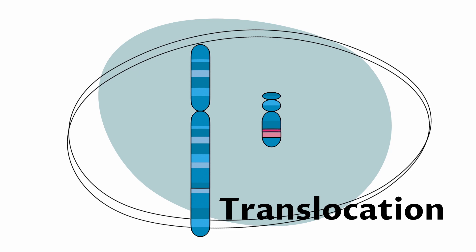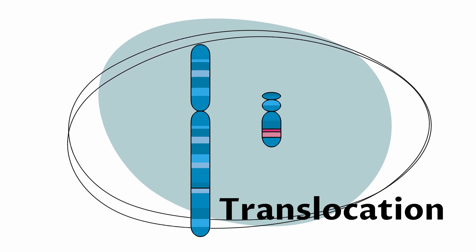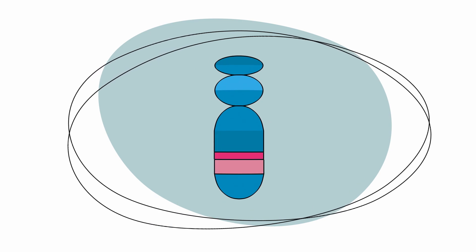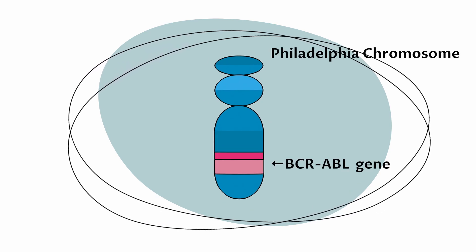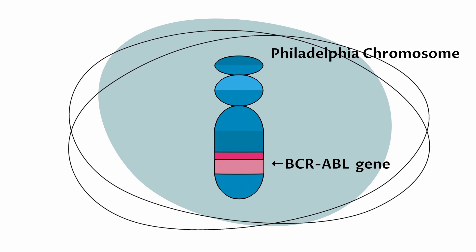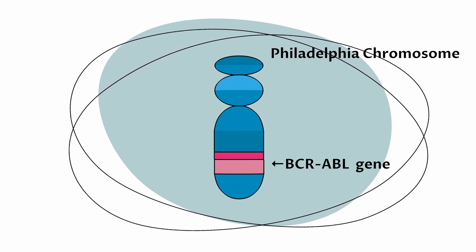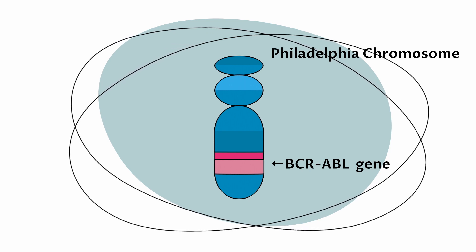This exchange of parts of chromosomes is called translocation. The changed chromosome 22, which contains a new gene called BCR-ABL, is known as the Philadelphia chromosome and is found in almost all people with CML.